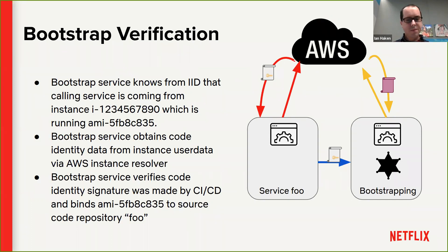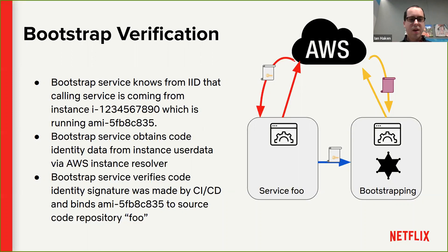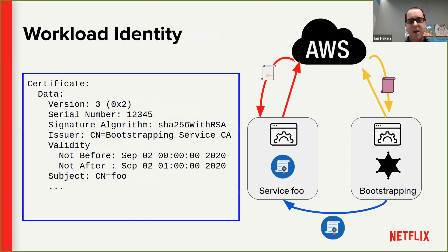What is the bootstrap server actually responsible for doing? It receives the instance identity document from the calling service and verifies it was really created by AWS — proving the call is coming from this instance ID with this AMI. It then calls AWS to get the user data, pulls out the code identity string, verifies that it was really made by our CI/CD infrastructure, and then has a binding between a given AMI ID and some code repository. Ultimately, the bootstrap service now knows with high confidence that the calling service was built from source code we call Foo — so it builds an X.509 certificate with Foo in the common name for Foo to use as its identity across the rest of our ecosystem.